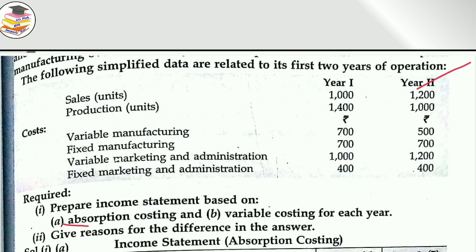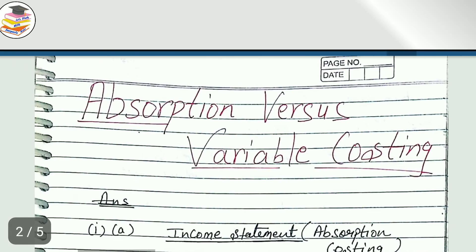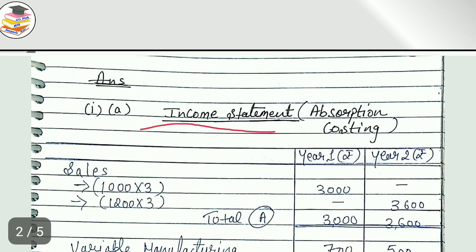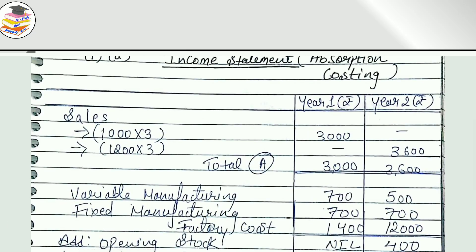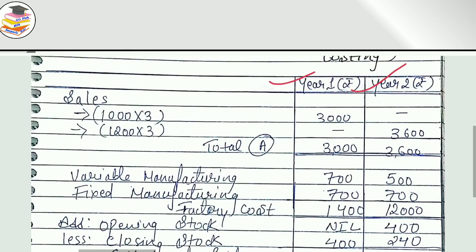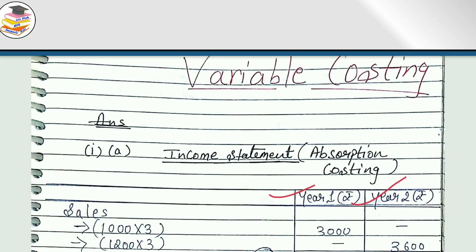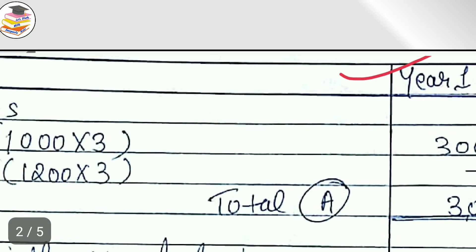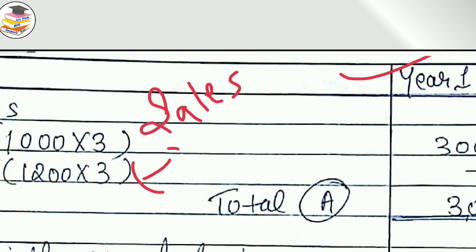In the first part, you have to prepare the absorption costing income statement. Let's see the format: you have year 1 and year 2 in the same format. The formula for absorption costing profit involves: sales minus total cost of sales equals profit.